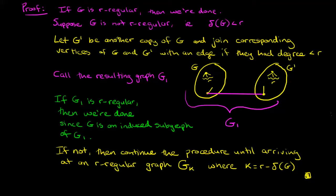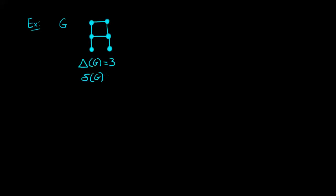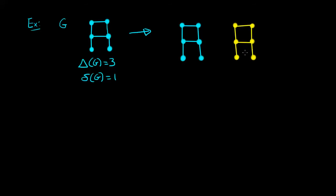To make sure we have a good understanding of this construction, let's take a look at an example. Let's take g to be this graph here, which has maximum degree three and minimum degree one. We now take another copy of g, drawn in yellow. We look at all vertices and find any vertex which has degree less than three and join it up with an edge — those are the pink edges here. Vertices that already have degree three we leave alone, and we call this graph g1.